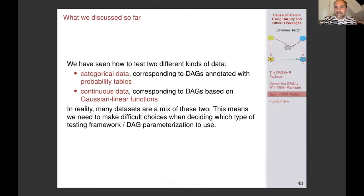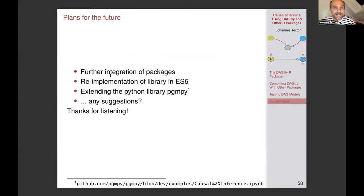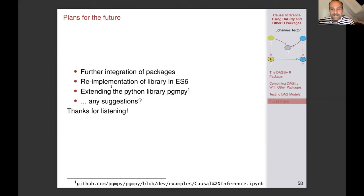Given the time, I will stop here. Let me quickly mention some future plans. I want to work more on integration with other packages so it becomes easier for users to use all of the products of our community. Technically I need to re-implement the library at some point in ES6 — a new version of JavaScript. I also want to mention that there is a nice Python library out there — pgmpy — for Bayesian networks, written by Ankur Ankan, who's working in my group as a PhD student and is extending pgmpy with nice causal inference functionality. Check that out if you prefer Python, and please give us feedback and future requests.